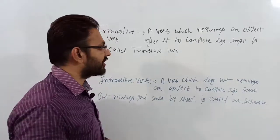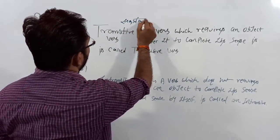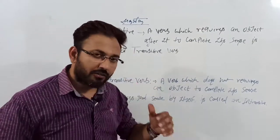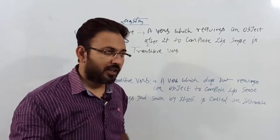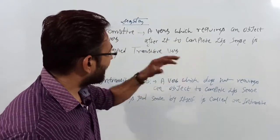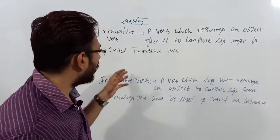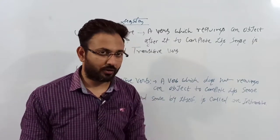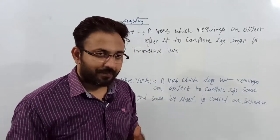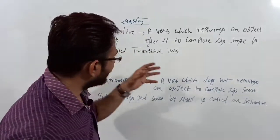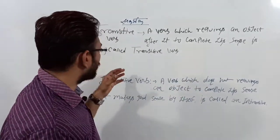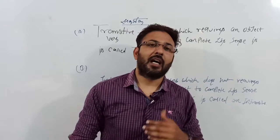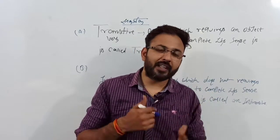Transitive in Hindi means Sakarmak kriya. A transitive verb is a verb which requires an object after it to complete its sense. So a transitive verb requires an object to complete its sense — that is the definition of transitive verbs.